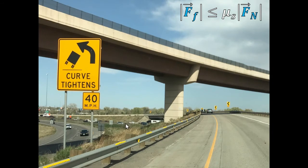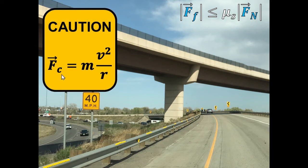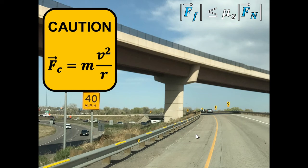The force providing that centripetal push is friction, and there's a limit to friction based on the normal force and coefficient of static friction. If you enter this tightening curve at 50 mph you might be fine, but when the curve tightens, you might not have enough friction and could end up off the road. Signs say 'curve tightens' with a picture of a tipping truck — but if everyone took physics, the sign could just say F_c = mv²/r. The posted 40 mph limit is the safe speed; going at 80 mph would likely cause a crash.